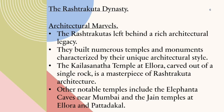The Rashtrakutas left behind a rich architectural legacy. They built numerous temples and monuments characterized by their unique architectural style. The Kailasanatha temple at Ellora, carved out of a single rock, is a masterpiece of Rashtrakuta architecture. Other notable temples include the Elephanta Caves near Mumbai and the Jain temples at Ellora and Pattadakal.